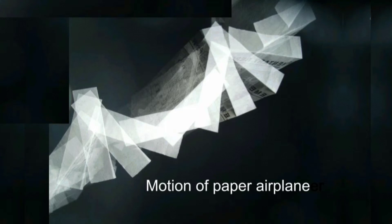Here's the flying paper airplane under a strobe light, showing the rotation motion as the paper airplane flies.